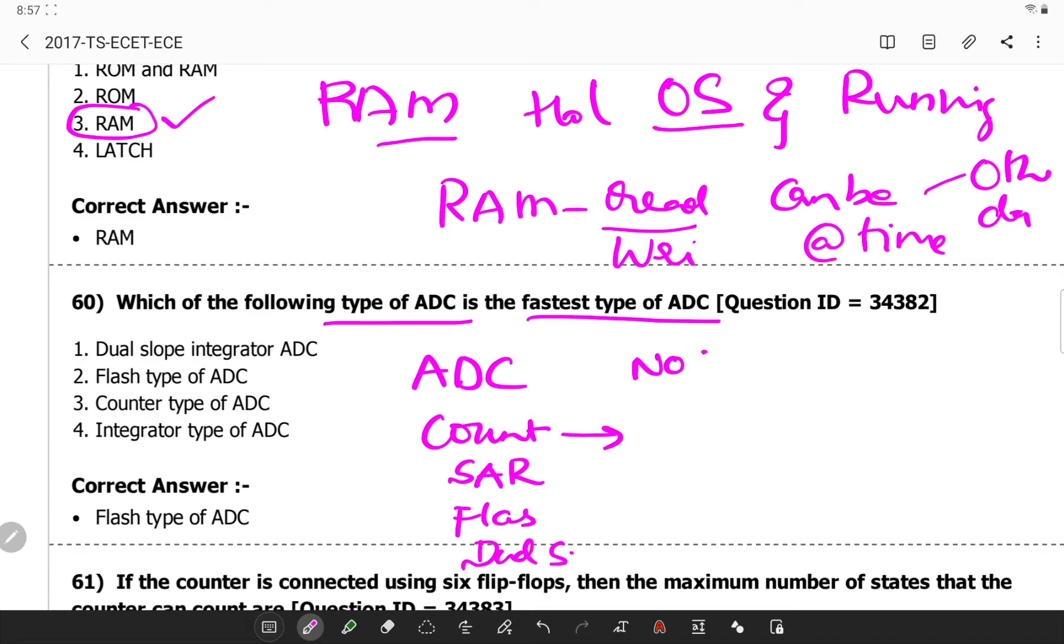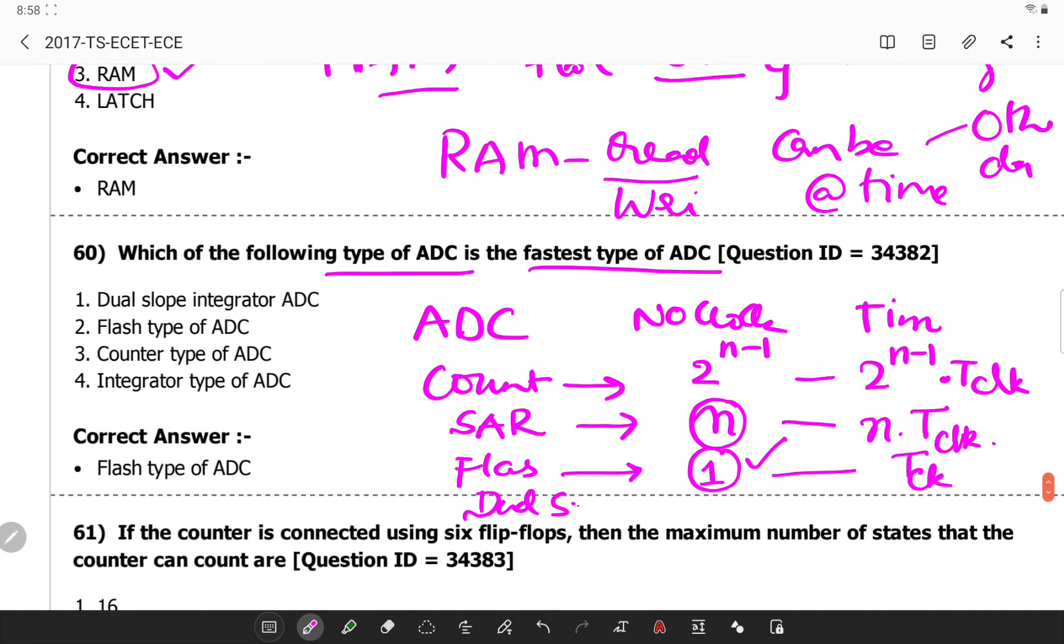The number of clock pulses in case of a counter type ADC is 2 power N minus 1 and the time taken by it is 2 power N minus 1 into T clock. In a SAR it will be taking N clock cycles and the time taken will be N into T clock. Similarly for flash, the conversion will happen in a single instant which means one clock cycle and it will take T clock cycles.